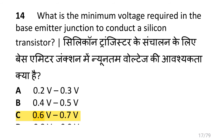What is the minimum voltage required at the base-emitter junction to conduct a silicon transistor? i.e. 0.6V to 0.7V.